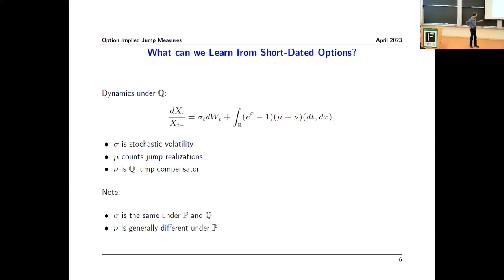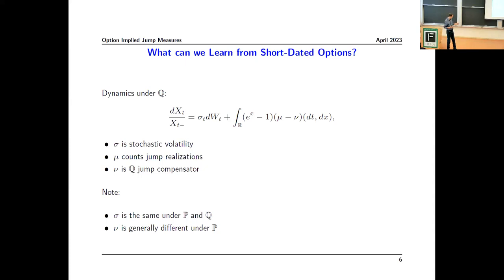The model has stochastic volatility — sigma_t — with dW a Brownian motion increment, and a jump part. mu is a measure that counts how many jumps took place over an interval of length dt and of size dx — it's a counting measure about a realization. nu is the expectation: how many jumps of a given size you expect over that interval. So mu minus nu is a martingale measure, putting the jump piece on equal footing with the continuous diffusive piece.